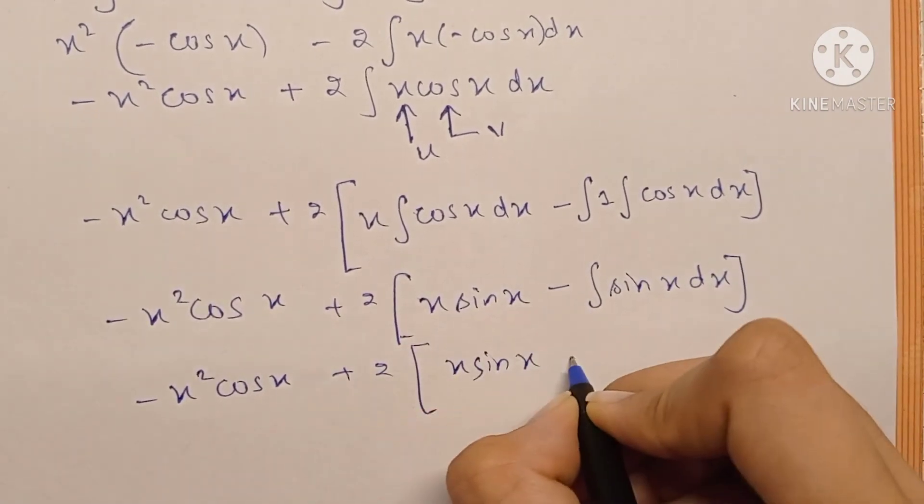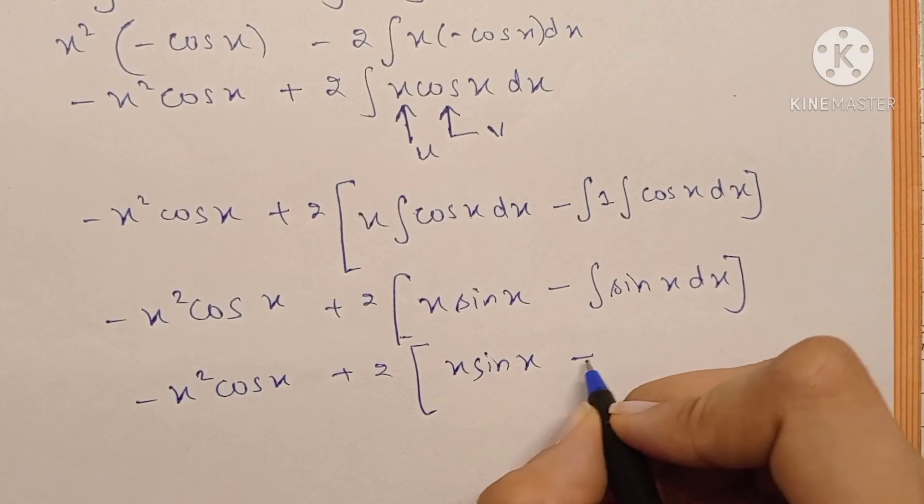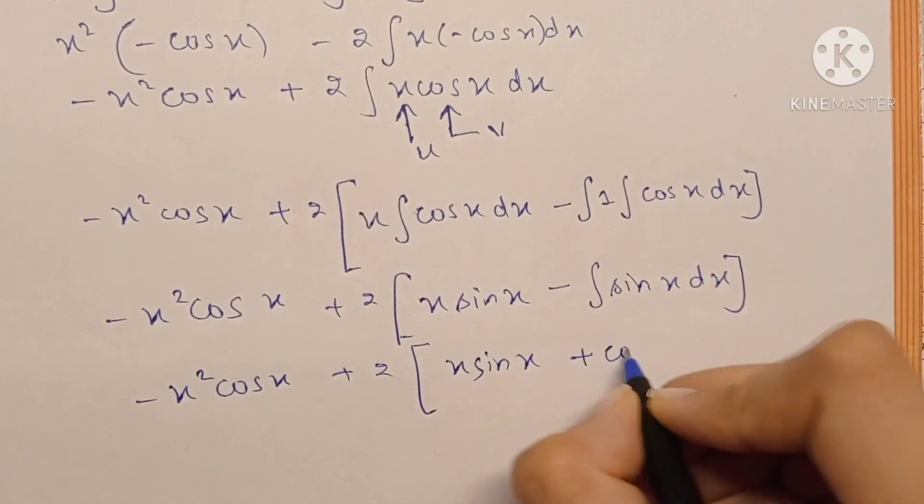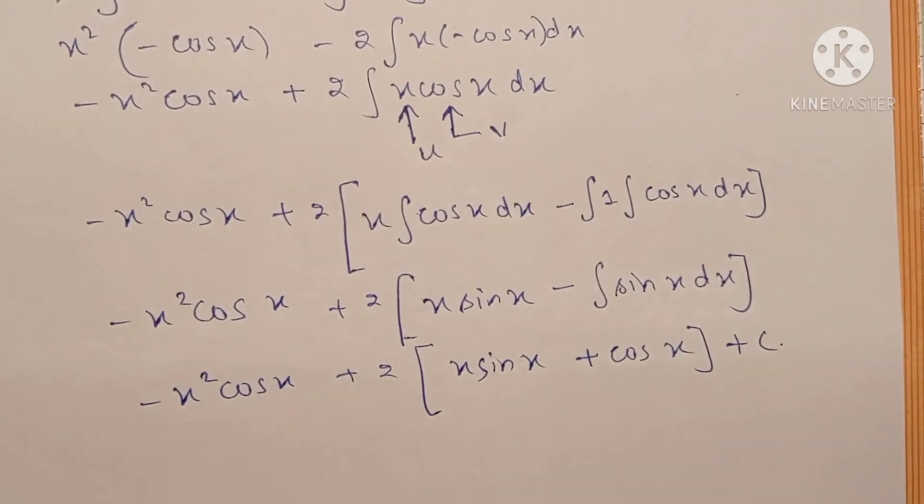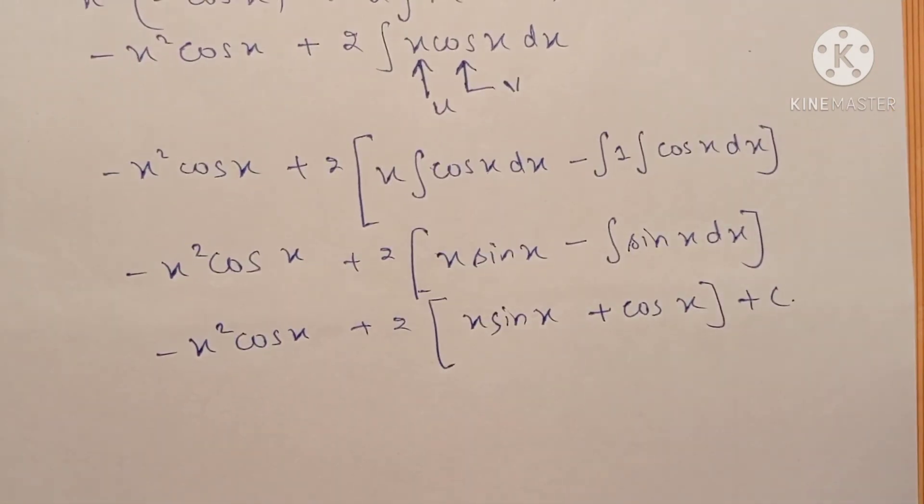Minus integration of sin x is minus cos x. Minus minus turns to plus, plus c. And this is exactly how the final answer is written in the textbook as well.